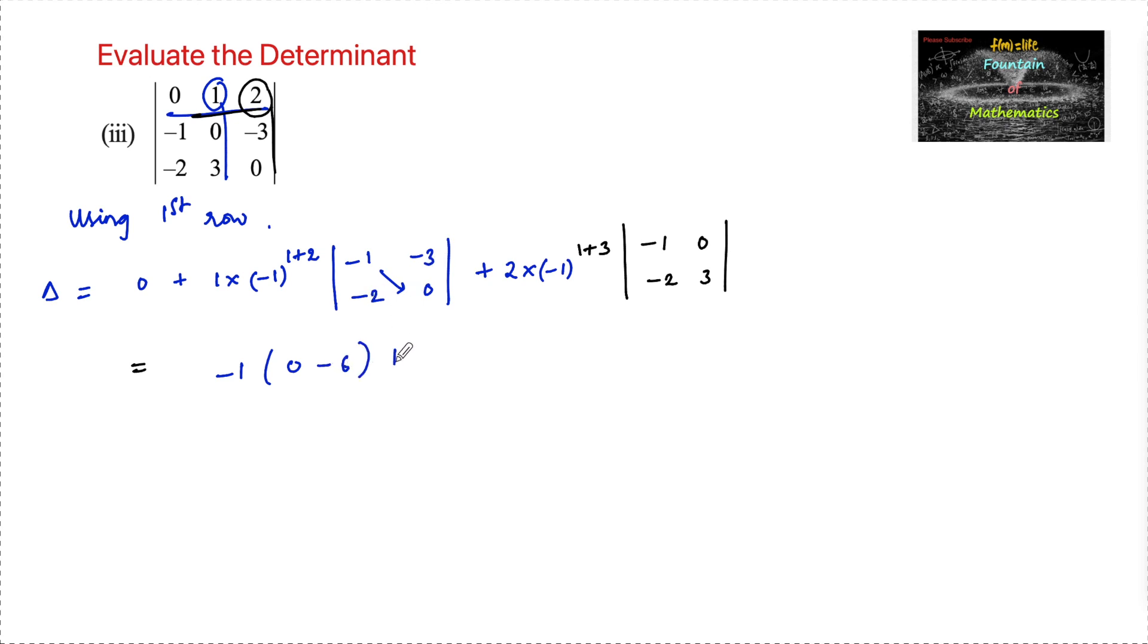And here, 2 times -1 to the power of 4 is even, so 1 times the determinant value -1 times 3 is -3, minus -2 times 0 is 0. Here we can add 0 minus 6 is -6, and -6 times -1 is 6.